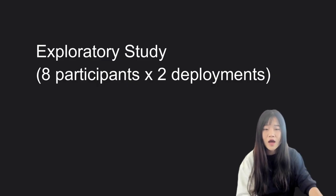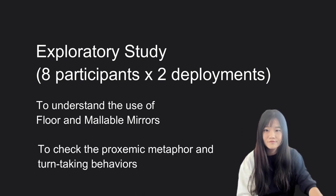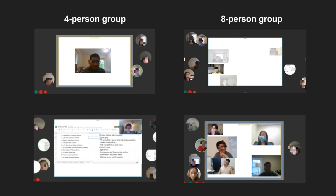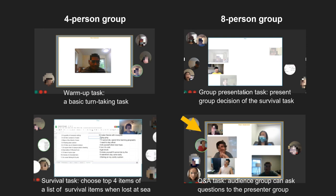We want to understand in our study how people will use the virtual floor and malleable mirrors to interact with each other, and how these features enable novel turn-taking behaviors. We conducted studies in four-person groups and eight-person groups. The eight-person group first broke out into two four-person groups for warm-up tasks and a survival task, where they needed to share choices via screen share and negotiate with their remote peers. The two four-person groups later convened into an eight-person group to present their choices, followed by a Q&A session.